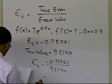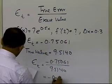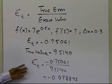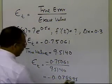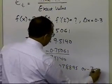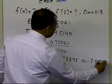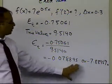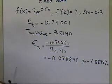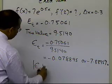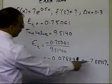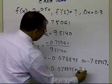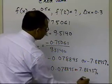This relative true error turns out to be equal to minus 0.078895. Sometimes the relative true error is expressed as a percentage, so in that case you multiply by 100 and get minus 7.8895 percent. It doesn't matter whether they ask you as a fraction or a percentage — you can always denote it in both ways. The absolute relative true error would then be 0.078895, or 7.8895 percent.